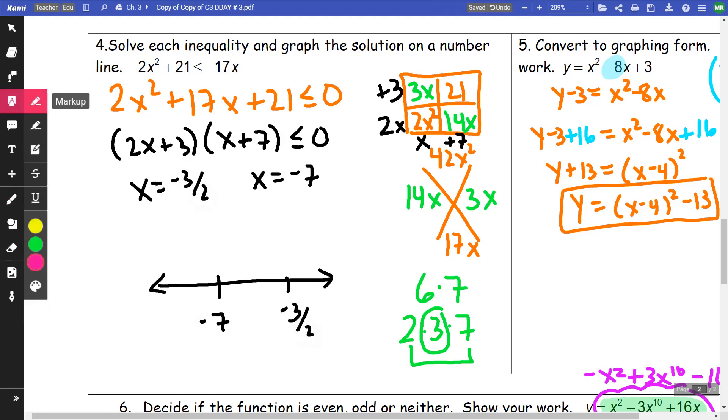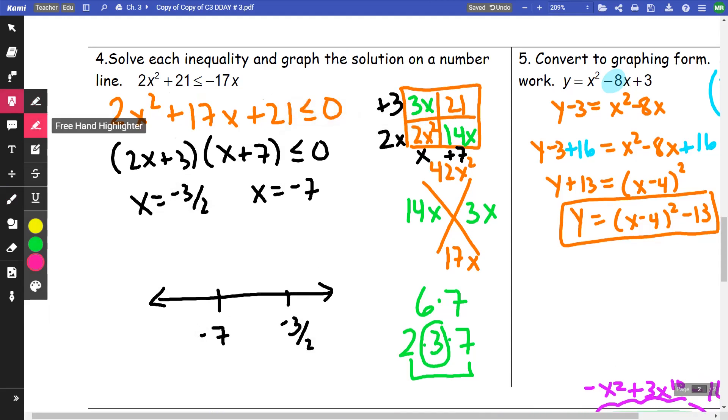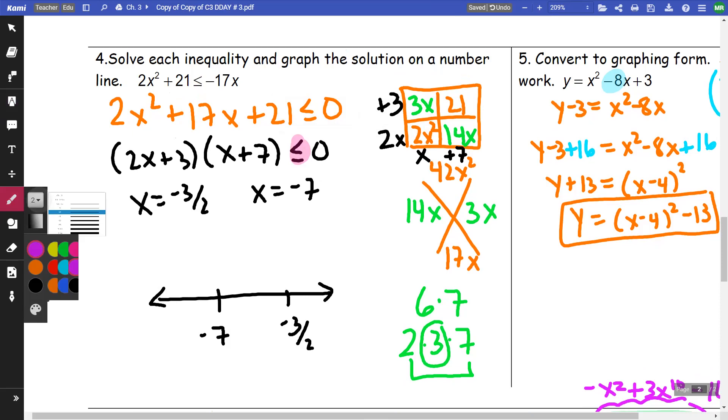Looking at the inequality, it is less than or equal to. So the equal to part is what I'm focusing on right now. So that means that I'm going to have a closed circle at negative 7, a closed circle at negative 3 halves.